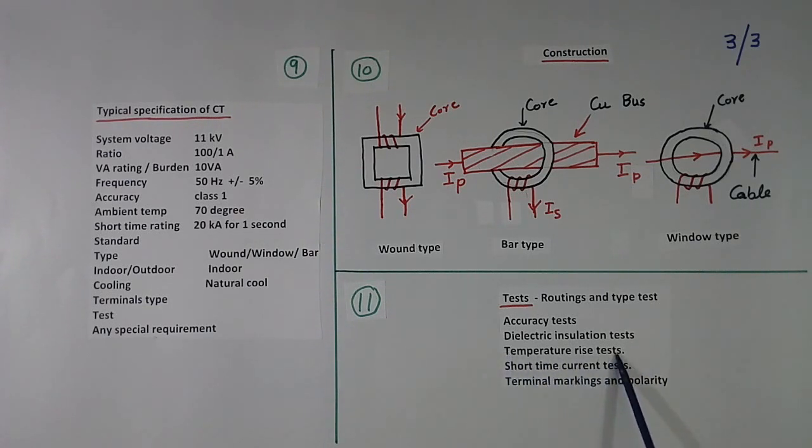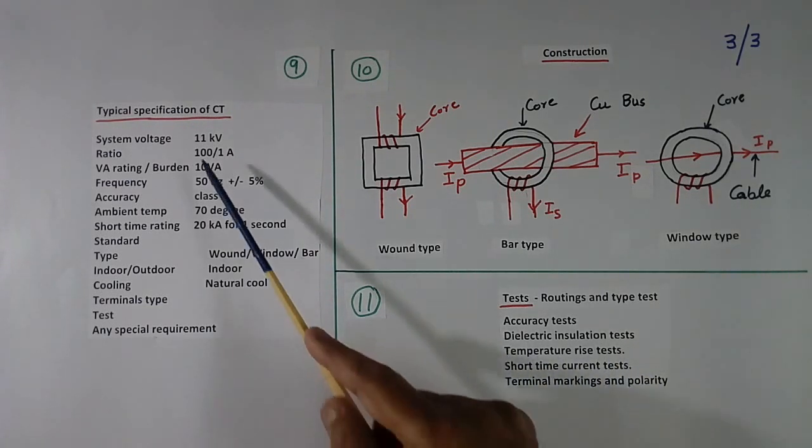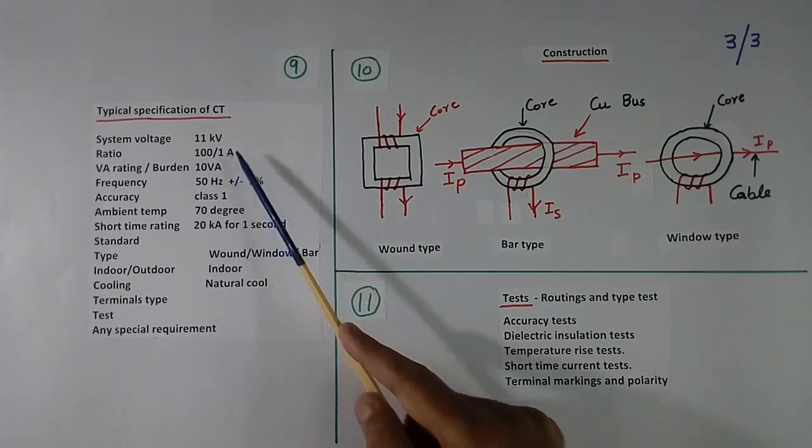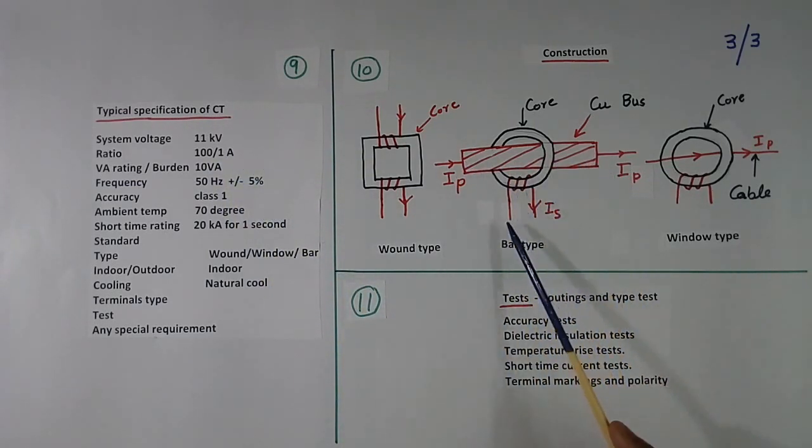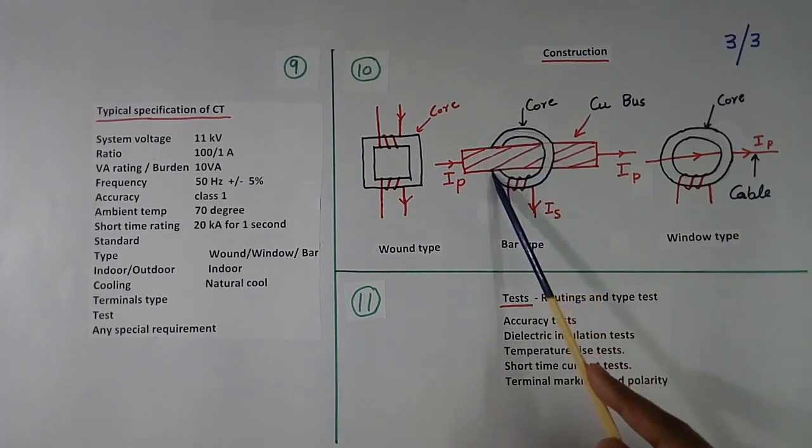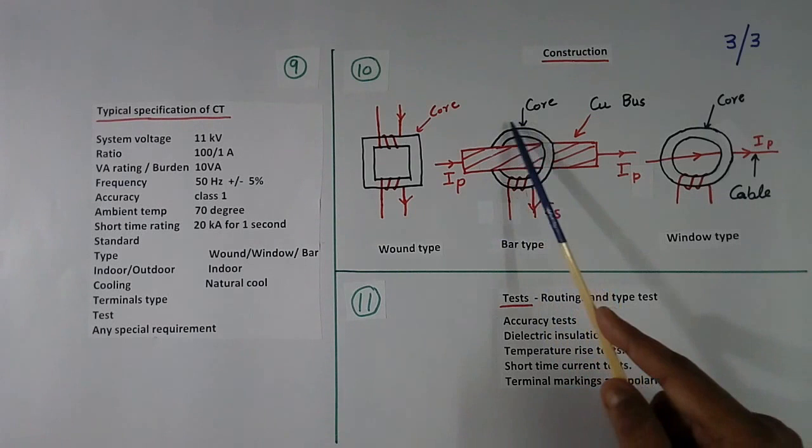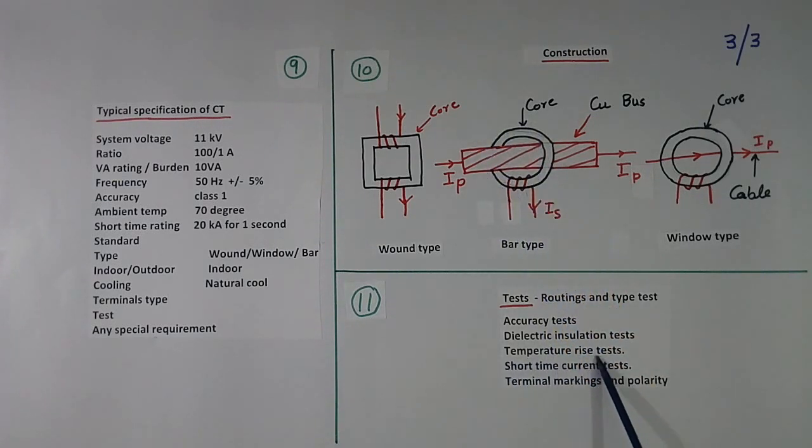Then temperature rise test. If it is 100 by 1 ampere, we will give full 100 ampere here and full load here. And check whether it is becoming hot or not. Or how much temperature is rising. That is called temperature rise test.